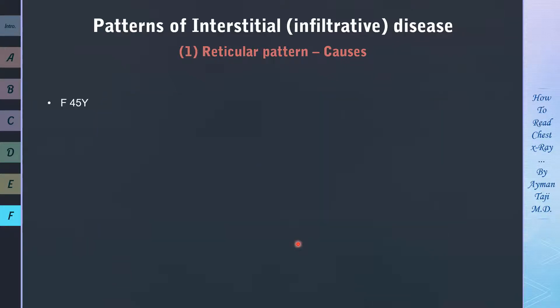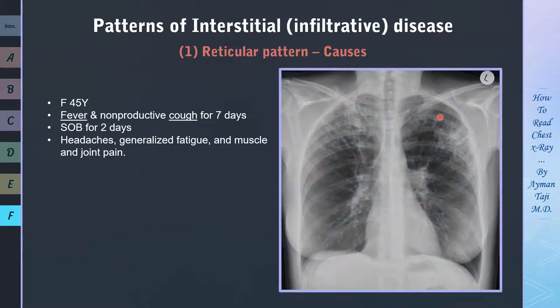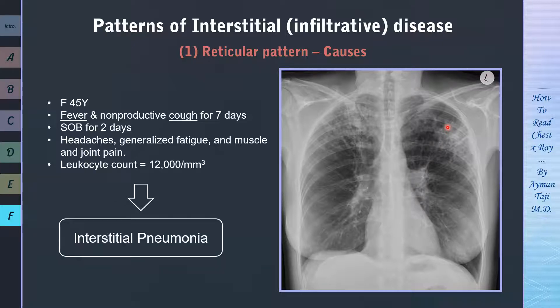A 45-year-old woman presents with fever and non-productive cough that started 7 days ago, shortness of breath for the last 2 days, along with headaches, generalized fatigue, and muscle and joint pain. Her CXR shows diffuse bilateral interstitial infiltrates, and her leukocyte count is 12,000. These findings are typical for interstitial pneumonia, also called atypical pneumonia, which shows diffuse reticular opacities on a CXR.